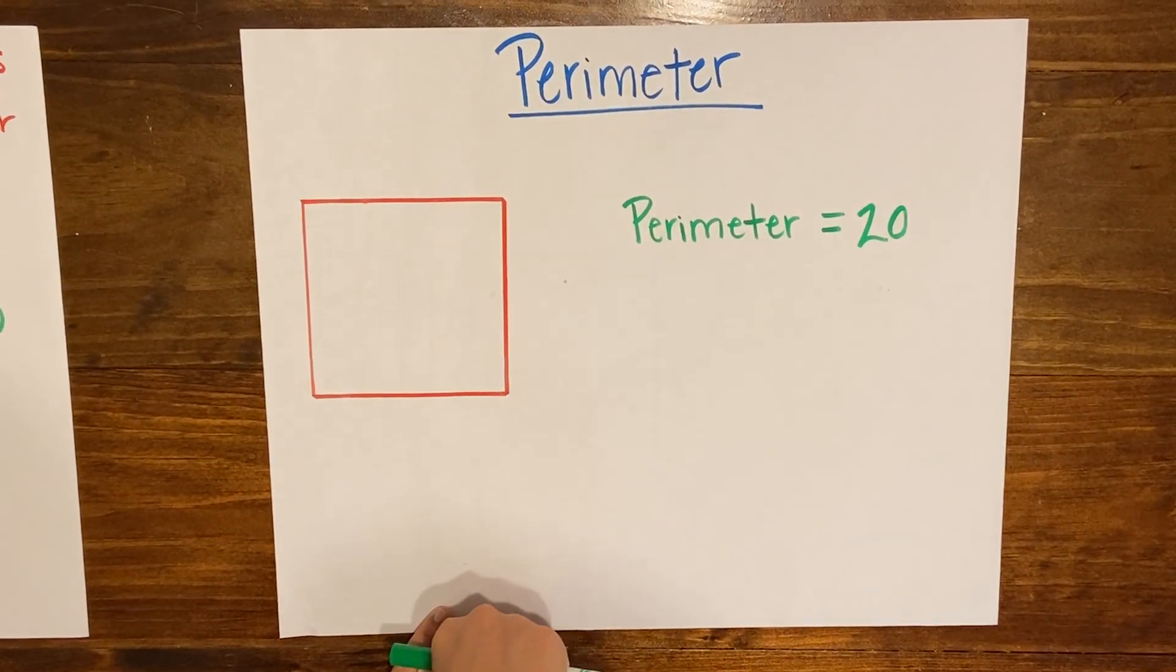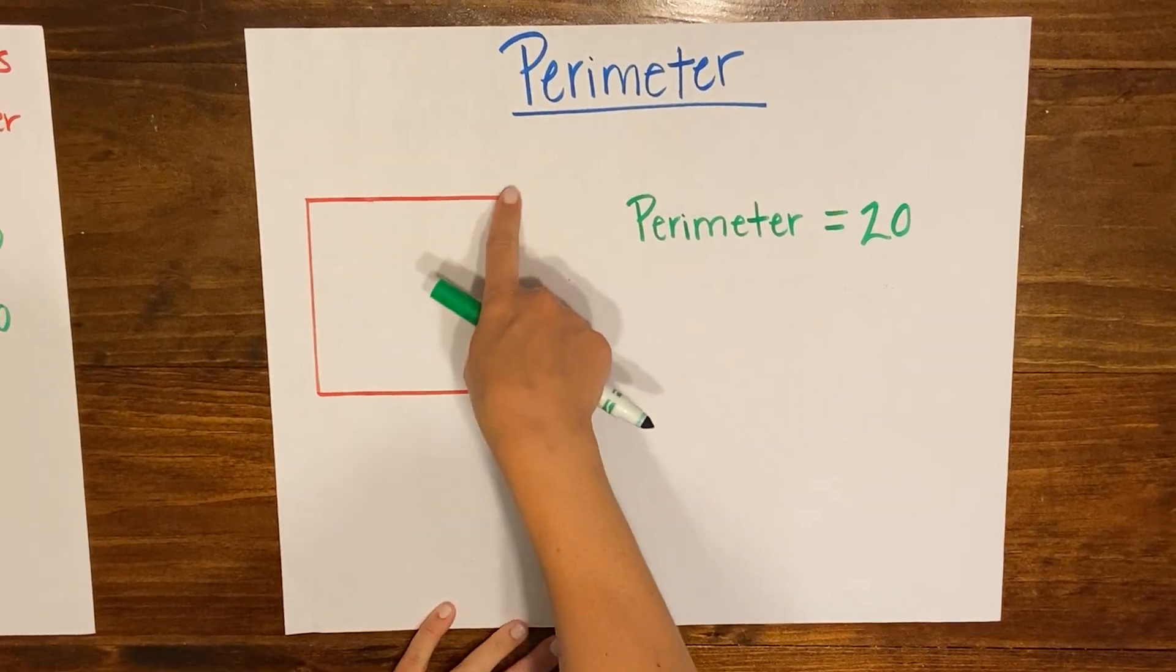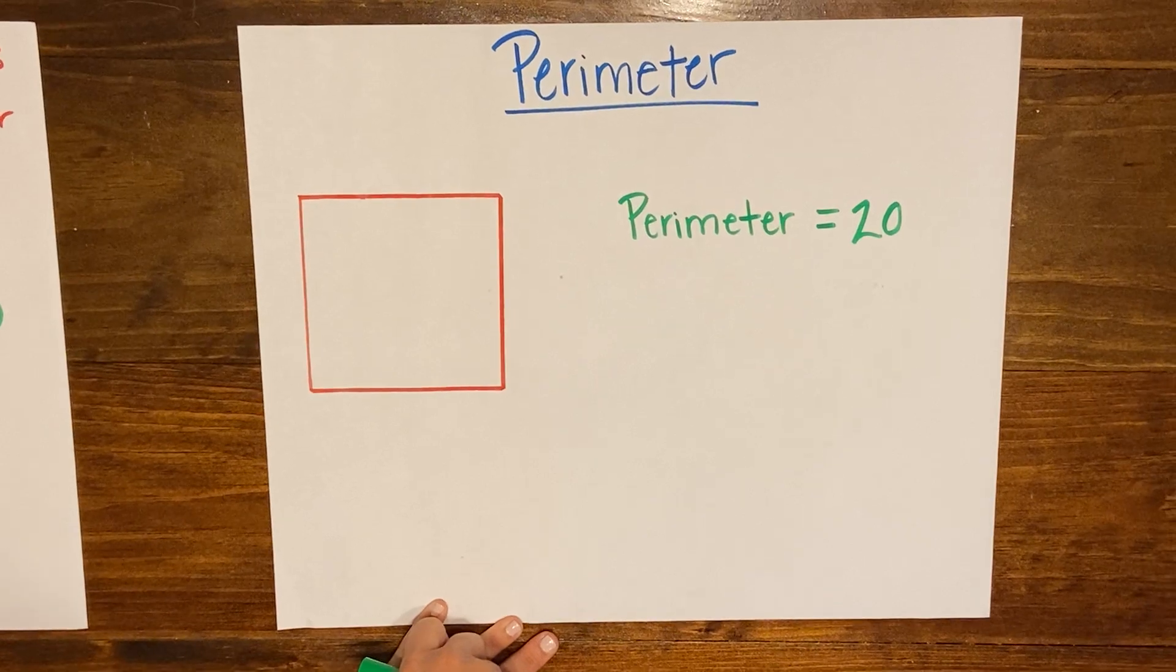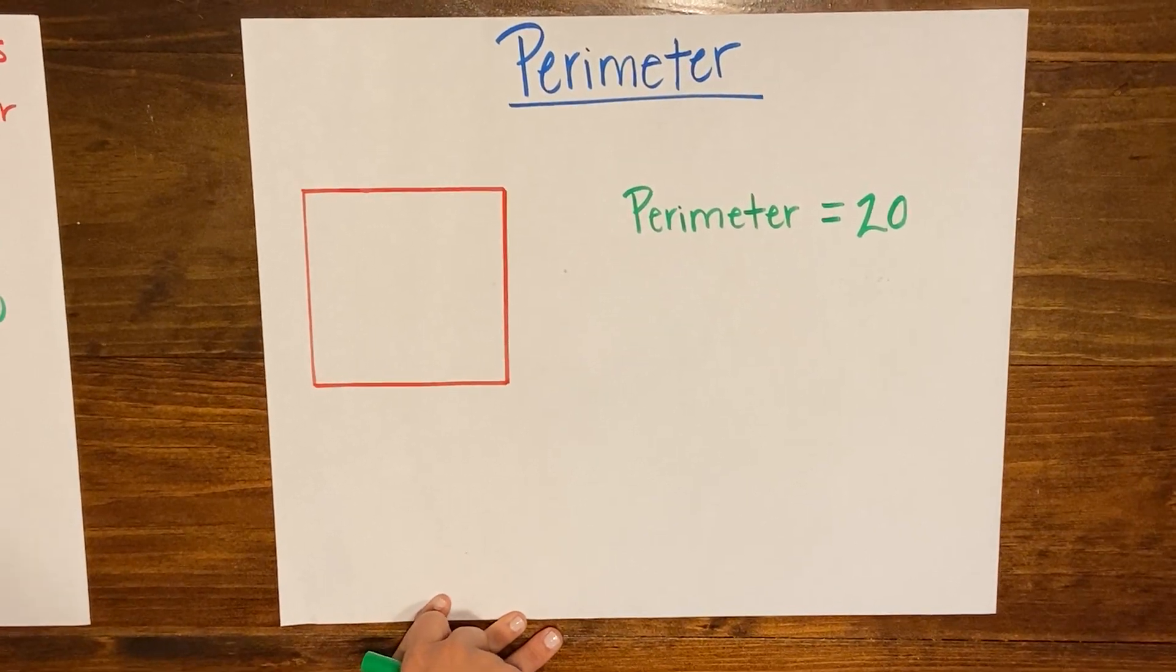So whatever this length is it's gonna be the same for the three other sides and I don't know what that length is to start with—that's what I'm trying to figure out.